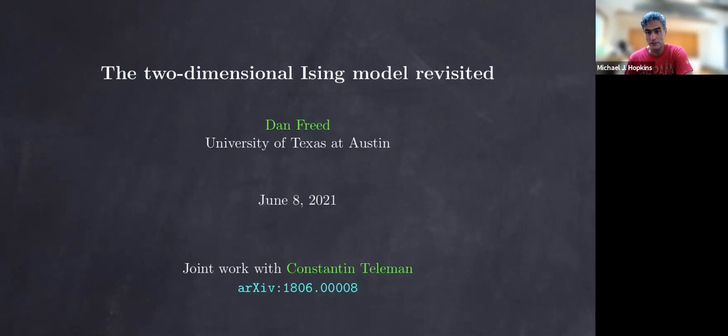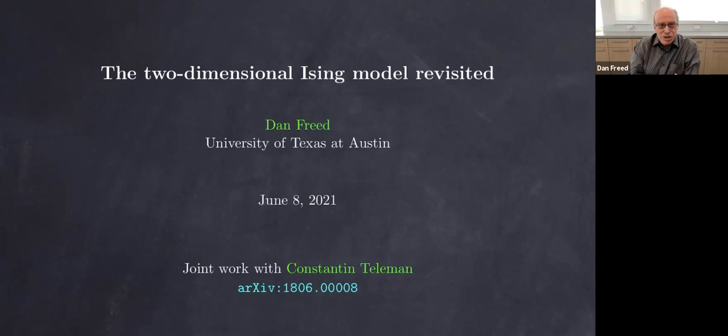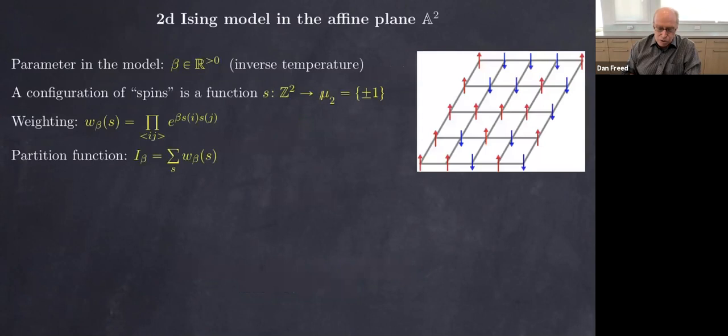Thanks, Mike, and good to see everybody — pleasure to be here. This is joint work with Constantine Teleman. Let me begin by introducing the two main characters of the story. The first main character is the Ising model in two dimensions, essentially as you'll see it in physics books — in the plane with a square lattice.